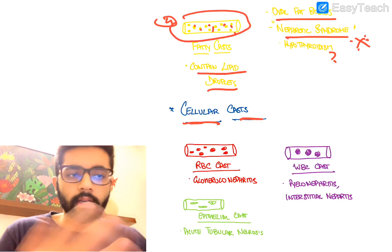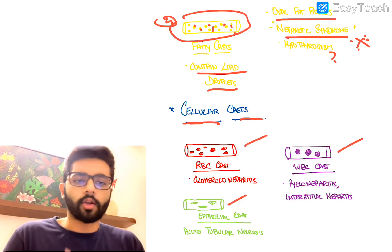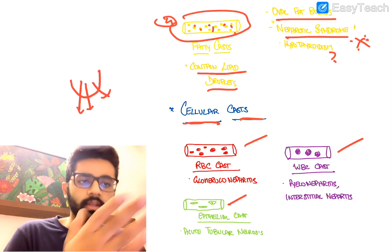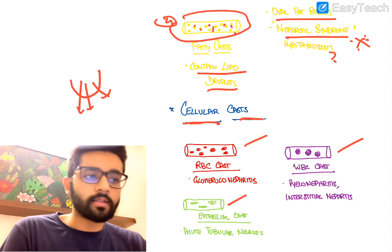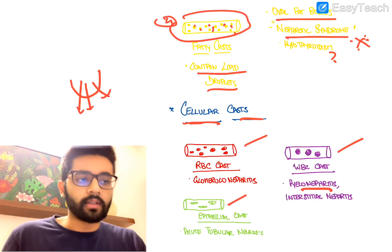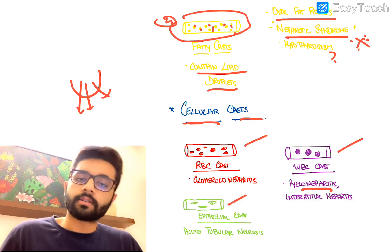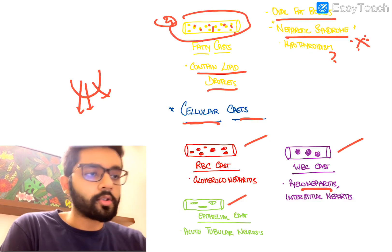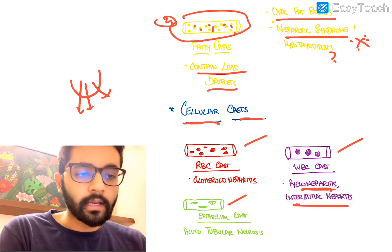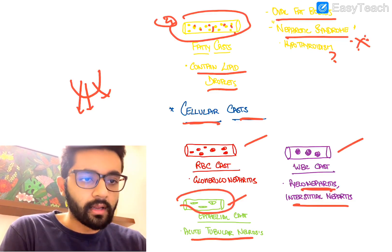Now for cellular casts, which contain cells. RBC casts contain red blood cells and are seen in glomerulonephritis — there is glomerular damage so RBCs leak through into the urine and become part of the cast. WBC casts are seen in infection of the renal parenchyma — pyelonephritis or interstitial nephritis — as WBCs invade and get excreted into the cast. Epithelial cell casts indicate acute tubular necrosis, as damaged tubular epithelium becomes part of the cast.